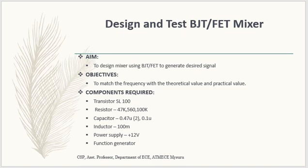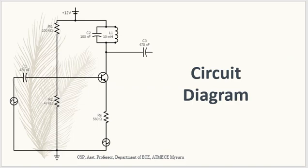This is the circuit diagram of the mixer I have designed. Based on the biasing, we have used a capacitor value of 470 nanofarad for the input biasing. There are two signals: M1(t) and M2(t). These are the two signals we are going to mix, and we will obtain the output at the collector. The combination of a capacitor and an inductor — what we call an LC circuit — acts as a local oscillator.